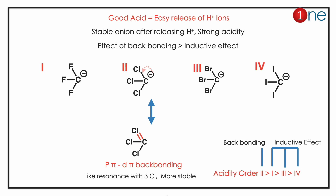So the concept to outline here is: in chloroform, the backbonding is stronger, which gives it higher acidity than any other halogen compound.